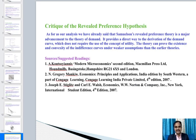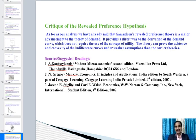Regarding critics of the revealed preference hypothesis: Samuelson's revealed preference theory is a major advancement in the theory of demand. It provides a direct way to derive the demand curve without requiring the concept of utility, and can prove the existence and convexity of indifference curves under weaker assumptions than earlier theories.